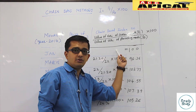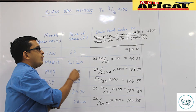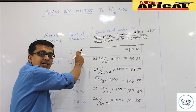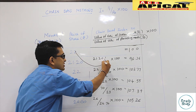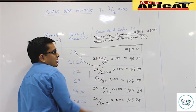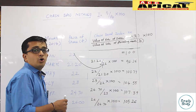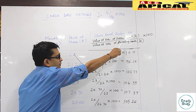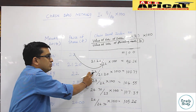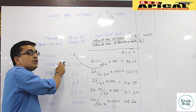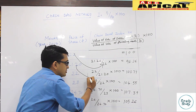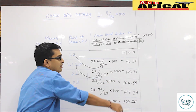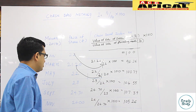For the month of March: p1 (current month value) = 21.2, p0 (preceding month, January) = 22, so (21.2 / 22) × 100 = 96.36. For the month of May: p1 (current month) = 22, p0 (preceding month, March) = 21.2, so (22 / 21.2) × 100 = 103.77.